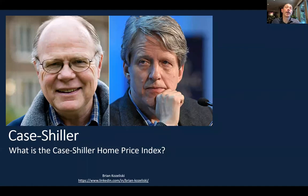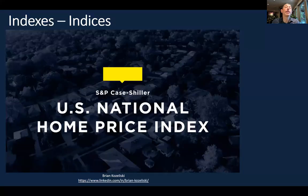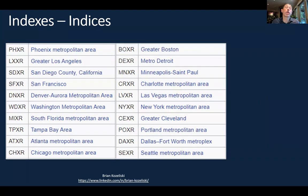Today I wanted to briefly discuss the Case-Shiller Home Price Index. It is an index that seeks to keep track of home prices by looking at repeat home sales. There is not one index — there is a national index, but there's also an index that keeps track of the 10 largest cities in the United States, one that keeps track of the 20 largest cities, and as you can see by the tickers here, there are individual indexes for each of these 20 cities.